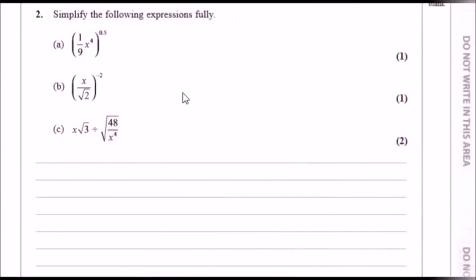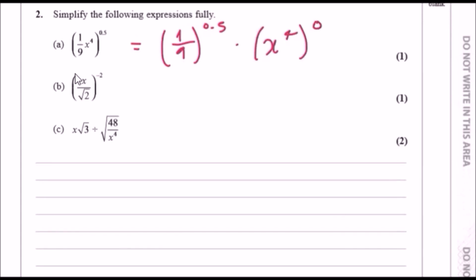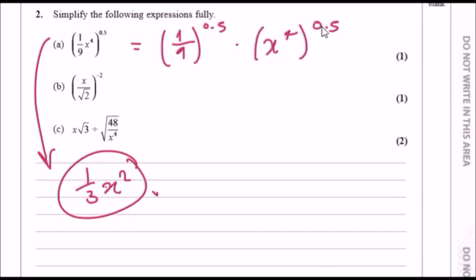Simplify the following expressions fully. Do this term by term. For part a, firstly take 1 over 9 to the power 0.5 — put that in a calculator and you get exactly one third. Then x to the power 4 to the power 0.5: multiply the powers, 4 times 0.5 equals 2, giving x squared. So part a is done.